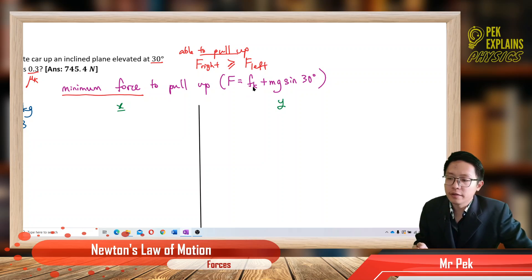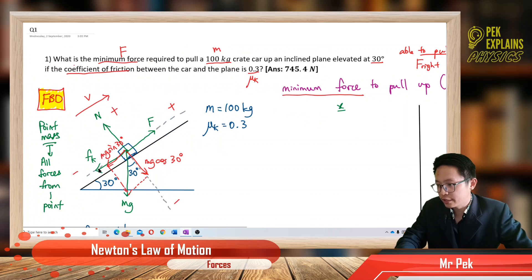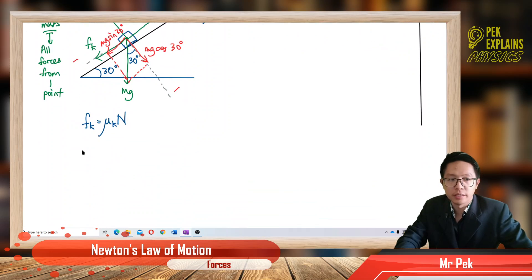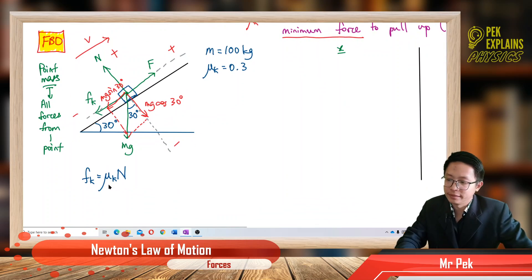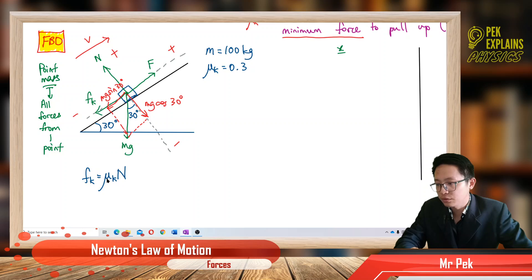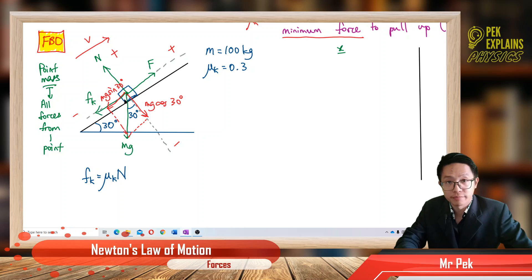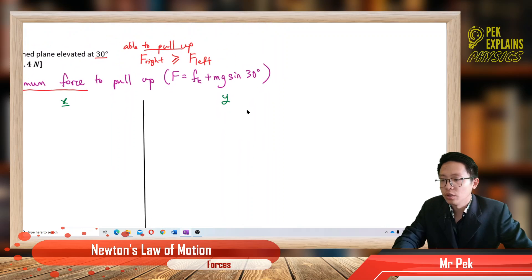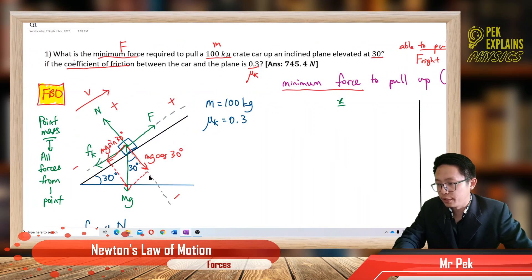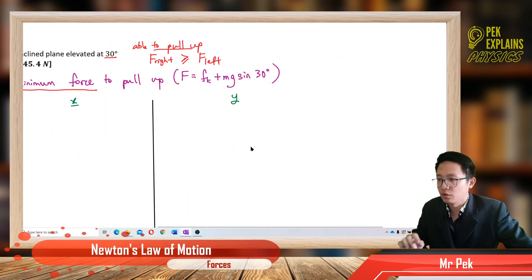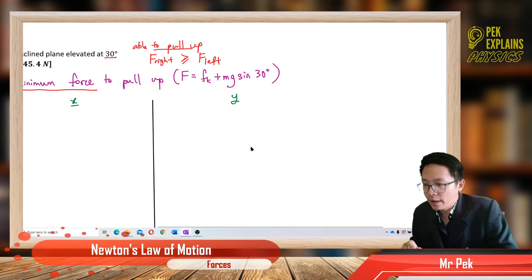We have to find the friction first. We don't have the friction — we only have the coefficient. The formula for friction is mu K times N. We have mu K which is 0.3, but we need to find the normal force. The normal force is in the y component. For the y component, the total Fy equals zero because there is no acceleration. Going up is the normal force — positive.